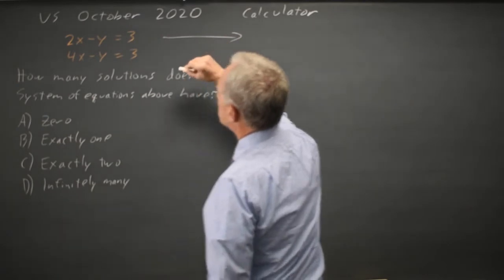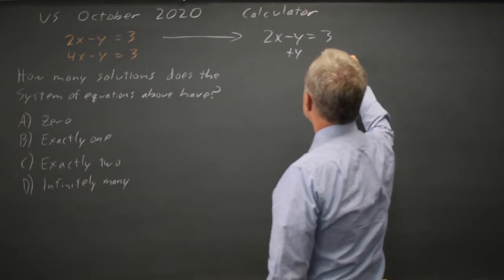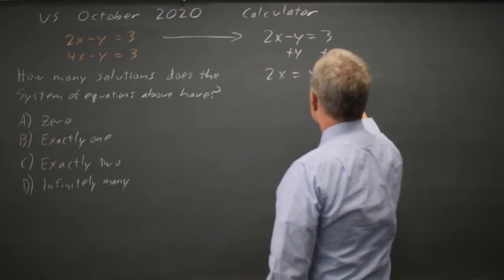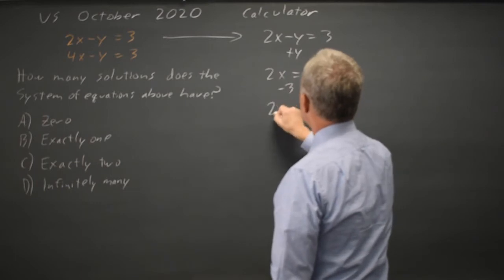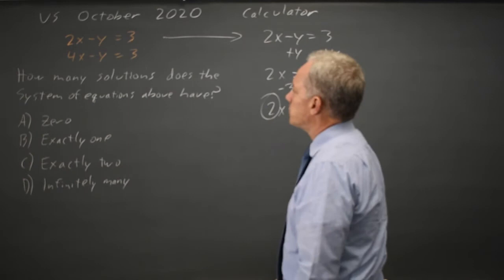You can rewrite the first equation, add y to both sides, subtract 3 from both sides, and you get that the slope is 2.